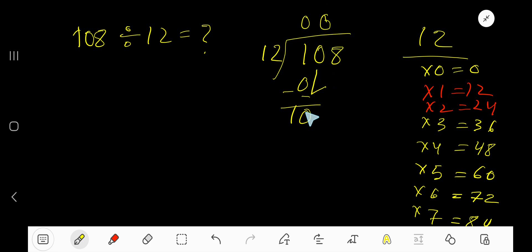0 times, as our current dividend 10 is less than 12. So 0 times 12 is 0. Subtract, you're getting 10. Bring down this 8. Now 12 goes into 108 how many times? Guess a number here, or use this multiplication table.